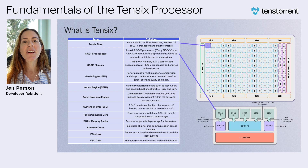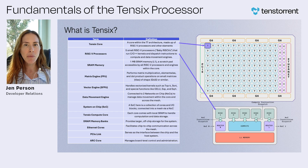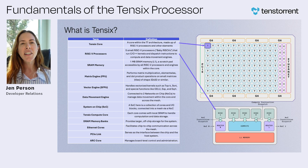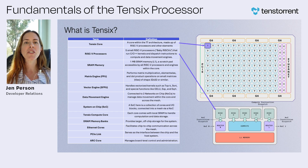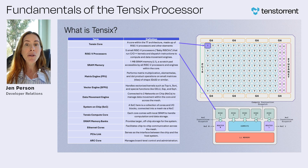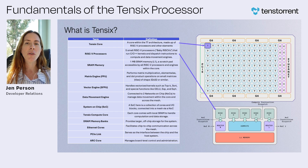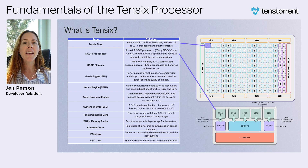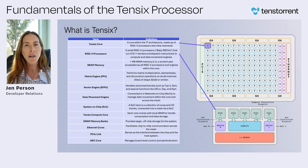The data movement engine manages data flow within each core and across the entire mesh, relying on two integrated networks-on-chip, or NoCs. Scaling up, these cores come together in a system-on-chip, SoC, which is a collection of cores and IO blocks interconnected through a NoC-based mesh. Each Tensix compute core features local SRAM for efficient storage, while DRAM memory banks provide larger off-chip storage to support system-wide performance. Ethernet cores facilitate chip-to-chip communication, ensuring data flows smoothly across the mesh, while the PCIe link — Peripheral Component Interconnect Express, a high-speed serial computer expansion bus standard — serves as the bridge between the chip and the host system. The ARC core is responsible for board-level control and system administration.